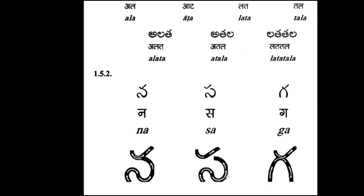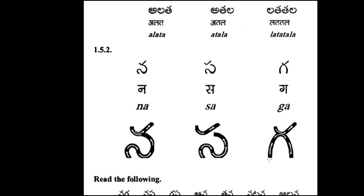The difference between 'na' and 'sa' is: 'na' is continuous, and for 'sa,' between the talakattu and the actual letter there is a little gap. Then this 'ga' — ga looks like this. It's just a half curve and talakattu. This is called the talakattu symbol. So these three letters you can practice, and tomorrow if you complete, we will go to the next part.